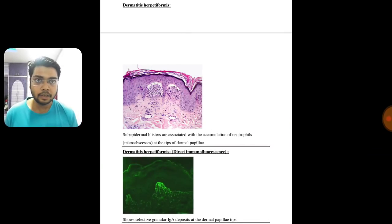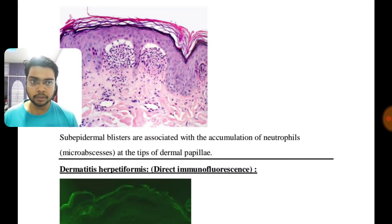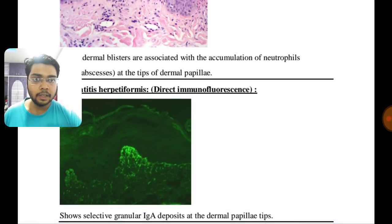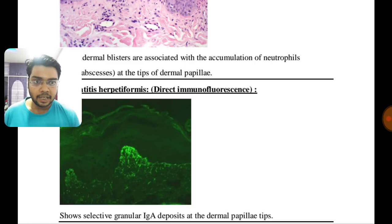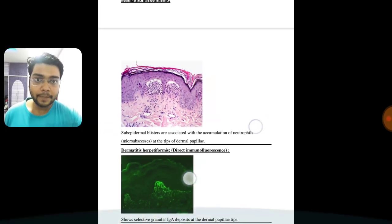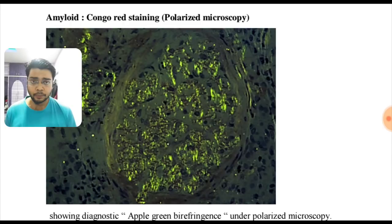Dermatitis herpetiformis is another important topic: sub-epidermal blisters are associated with accumulation of neutrophils — micro-abscesses at the tips of dermal papillae. The immunofluorescence is very characteristic: IgA deposits at the dermal papillae tips. You will not get this wrong.